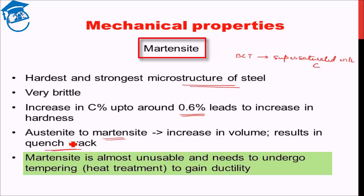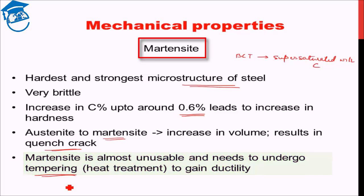Thereby martensite has to undergo a certain kind of heat treatment which recovers some of the ductility. The heat treatment that martensite undergoes to recover some amount of ductility at the expense of losing some of its strength is known as tempering. Tempering is basically a heat treatment where we take the martensite to a relatively higher temperature, somewhere between 250 to 600 or 650 degrees Celsius, and leave it there for a certain time. Thereby internal stresses reduce through some degree of diffusion of the supersaturated carbon, leading to a slight loss in hardness and strength but much better toughness and ductile properties. We will see this exact tempering treatment process in our next lecture.